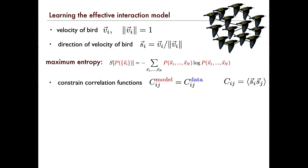I'm going to constrain my distribution of directions as little as possible — allow it to be as large as possible. However, I'm going to constrain certain observables, and in this case we constrain specifically the correlation function. So we're going to say that the correlation functions we calculate from the model should be exactly the same as the correlation functions of the direction of the velocity of the birds as observed in the data. Claire showed you examples — this is just a big matrix that we actually know.